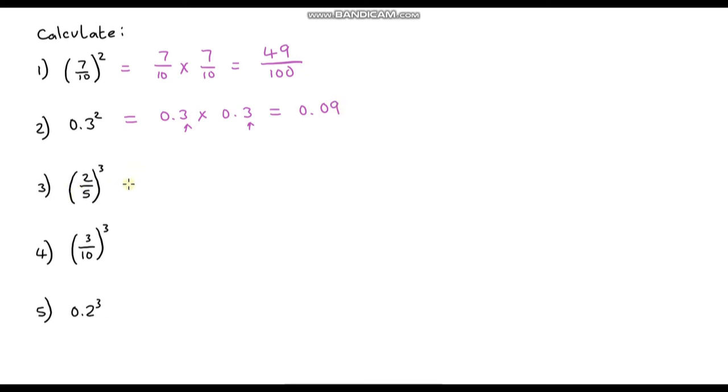Okay question 3, two-fifths cubed. So that is going to be two-fifths multiplied by two-fifths multiplied by two-fifths. So let's do our numerator first. 2 times 2 times 2, well that gives us 8. And 5 times 5 times 5 is 125. So our answer is 8 one-hundred-twenty-fifths.